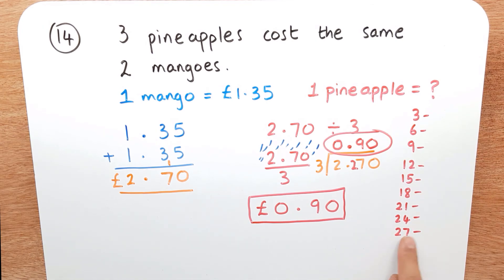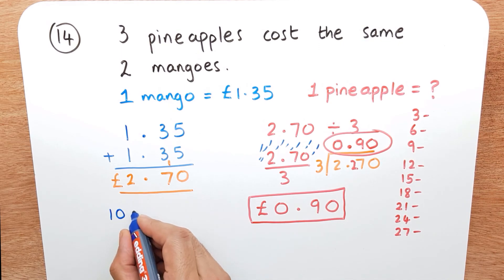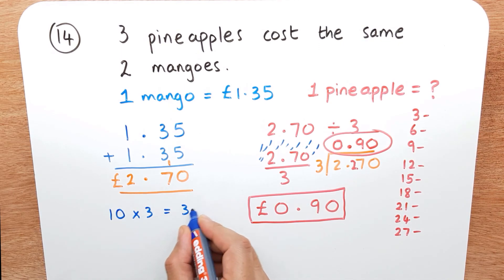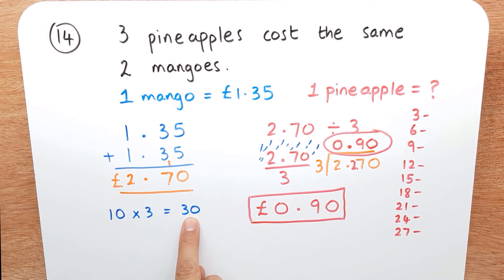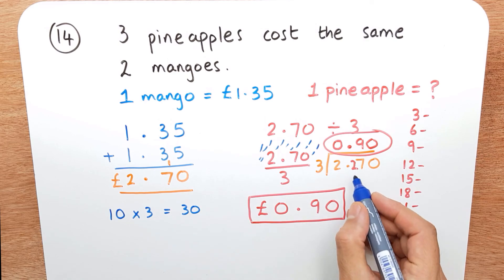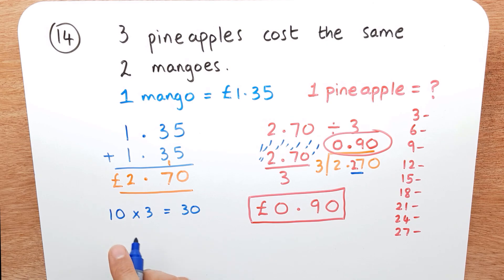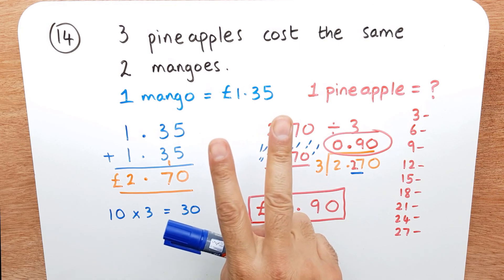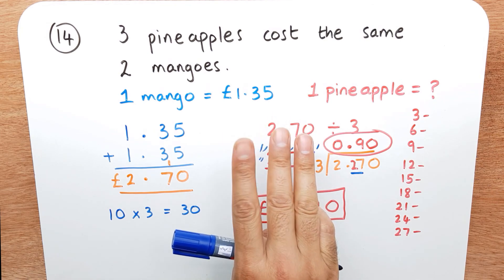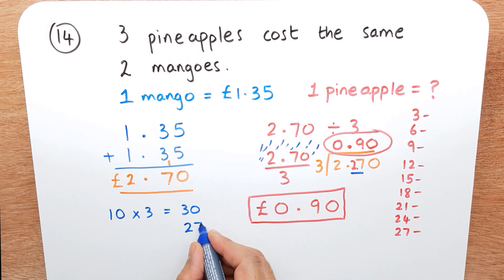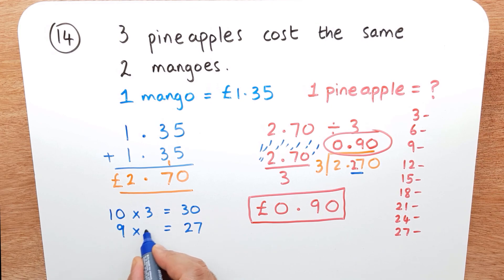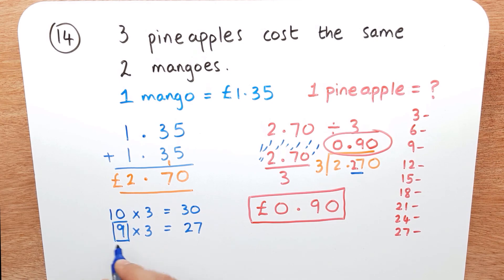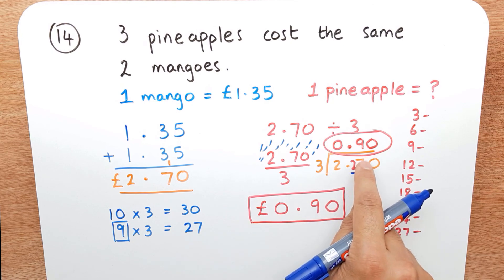Another way to use your times tables: you should know that 10 times 3 is 30, and 30 is very close to 27. Take away 3 from 30 — counting backwards: 29, 28, 27 — so I've taken away three and I'm on 27. That means nine times three, or nine lots of three, is 27. So the answer is 9.